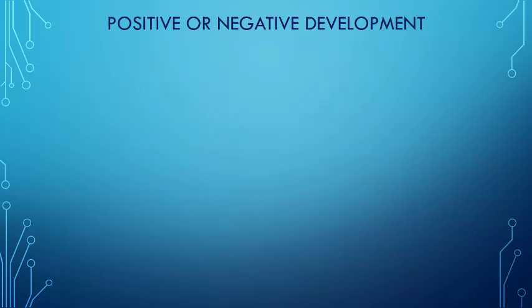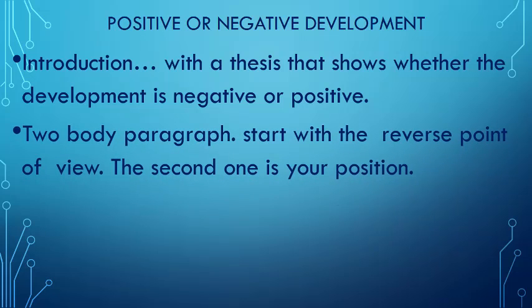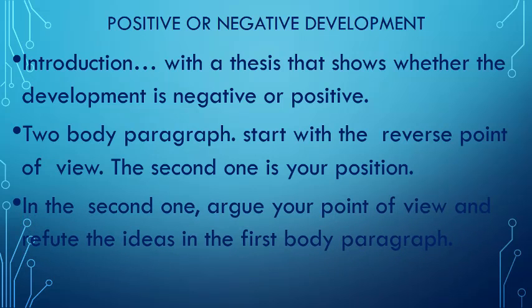The second type is: is this a positive or negative development? You write an introduction with a thesis that shows whether the development is negative or positive — you have to show what you believe. Then two body paragraphs: you start with a reverse point of view. For example, if you think this is a negative development, you start with the positive aspects and then move to the negative. If you think this is a positive development, you start with the negative aspects and then move to the positive. In the second body paragraph you argue your point of view and refute the ideas mentioned in your first body paragraph. Then the conclusion.